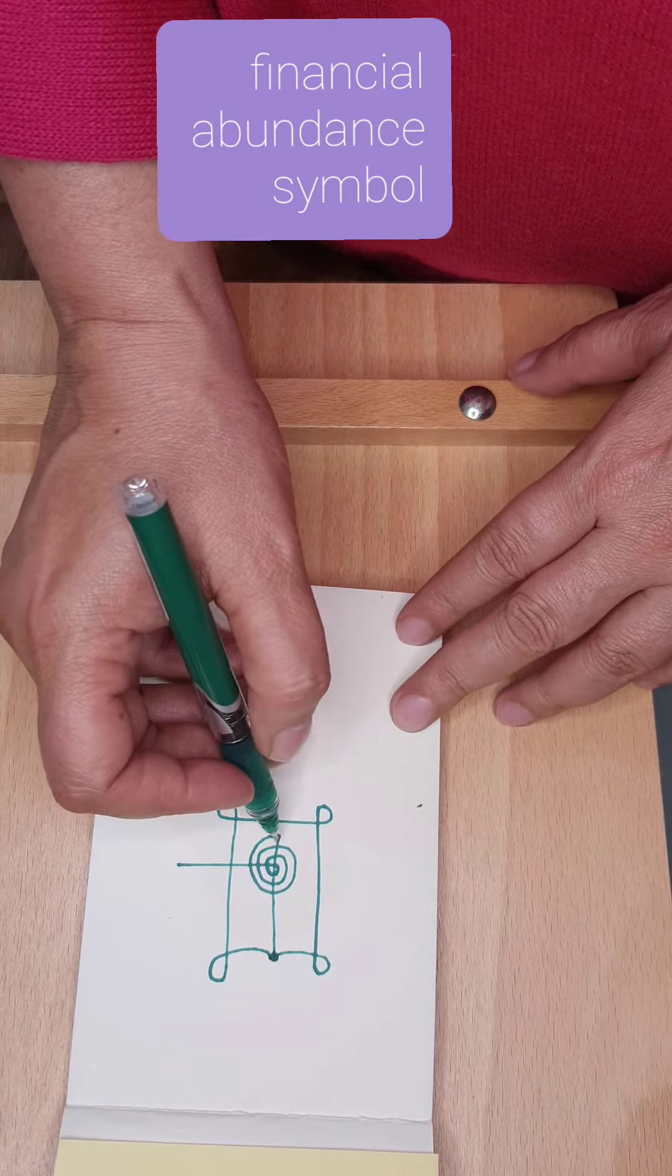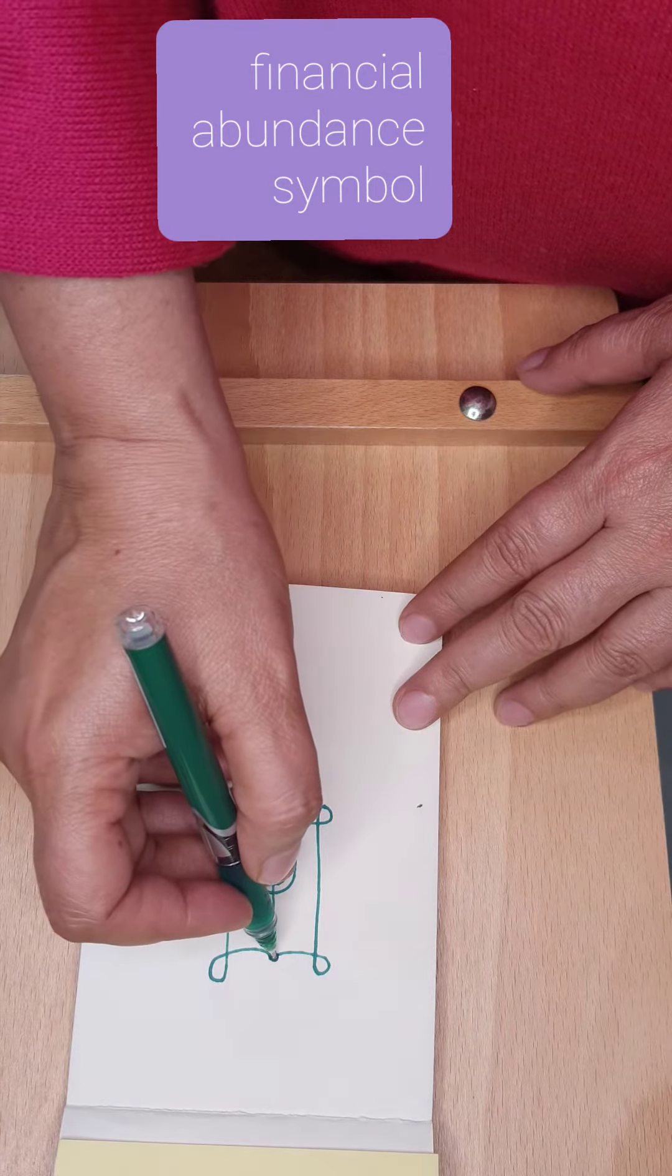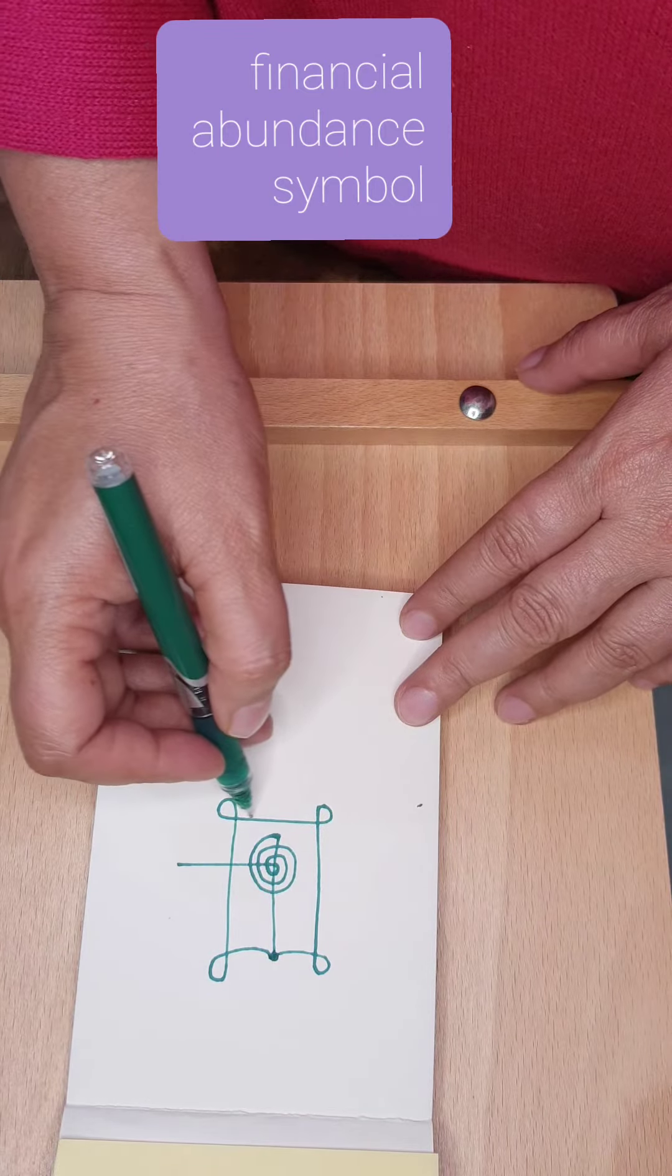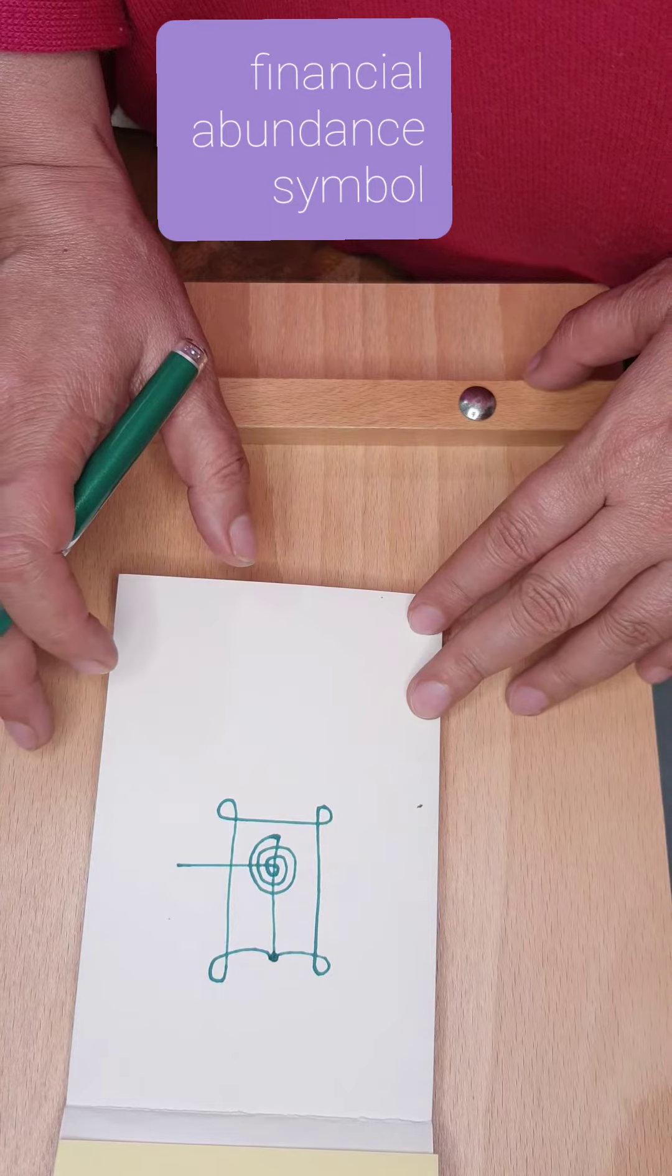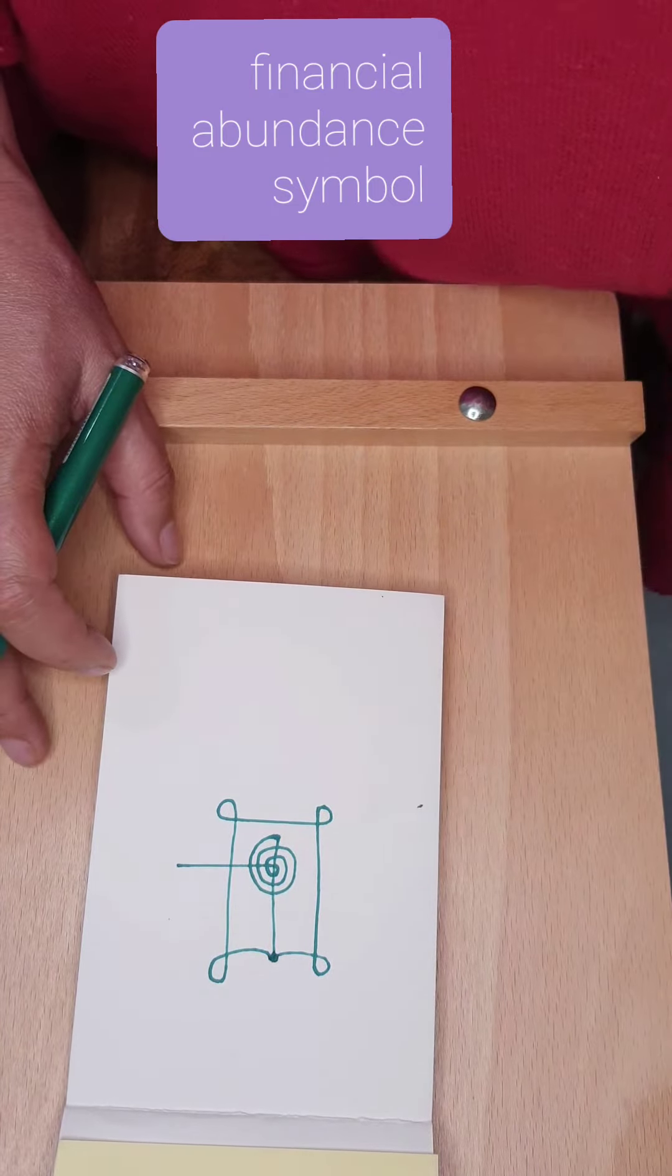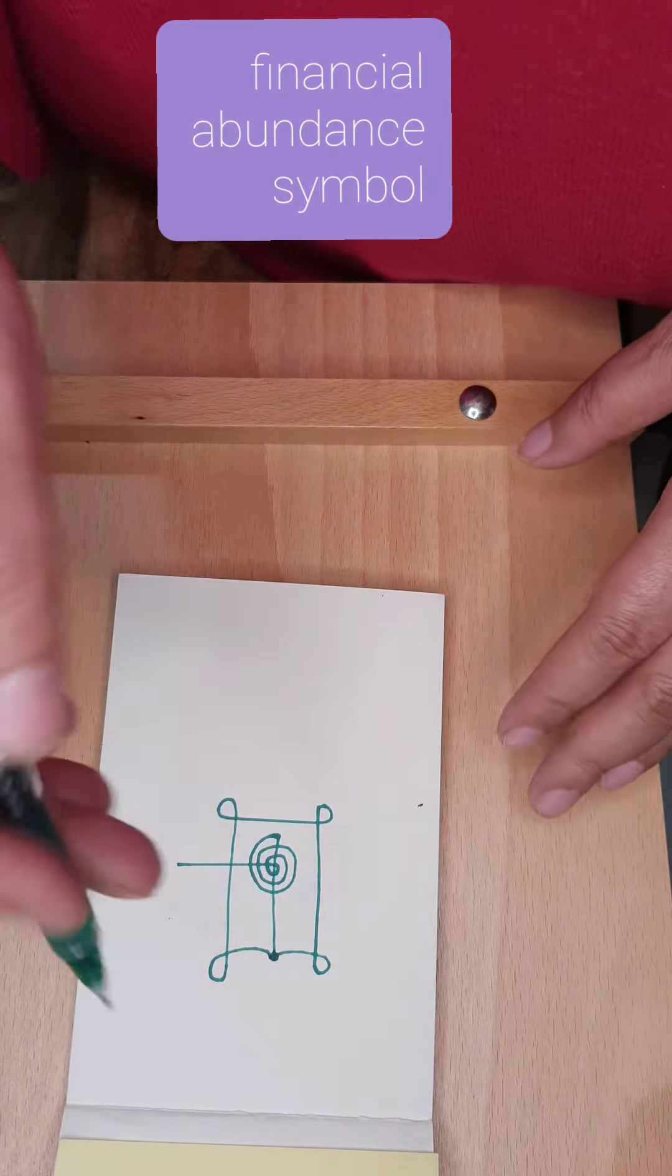It's almost like a jalebi, and then you take up and then you make a turn here, bring it down, then the four corners and then cover it up. You can do it on bhujpatra, golden paper, or white paper with a green pen.